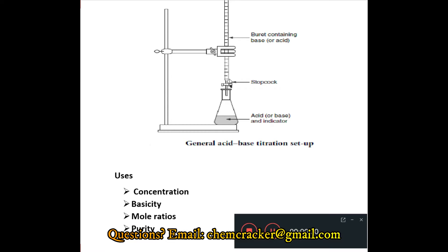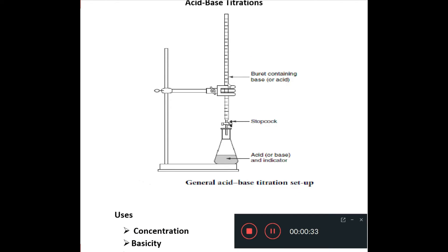I'm going to start with the definition of a titration. Titrations are also called volumetric analyses. In titrations, what you're doing is that you're neutralizing one chemical using another. Specifically, in terms of acid-base titrations, we are neutralizing an acid with a base or vice versa. We're measuring the volume of acid or base required to neutralize a known amount of base or acid.